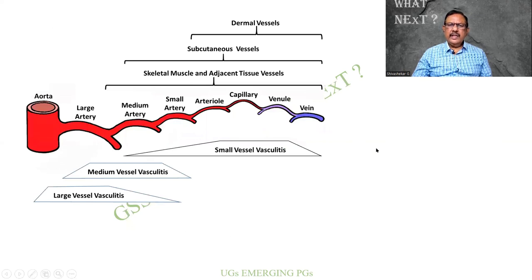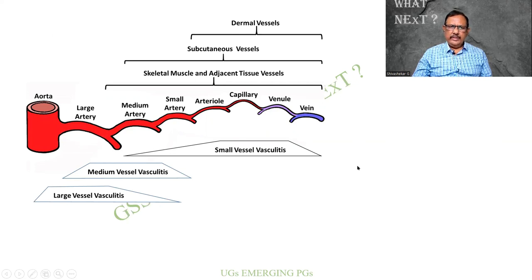This is just a recapitulation of vasculitis. The aorta and other large arteries, medium arteries, small arterial capillaries, and sometimes even the venules are involved — that is why it is called vasculitis. There are some diseases limited to the large, medium, small, and some to the arterioles and capillaries. We shall be seeing them.